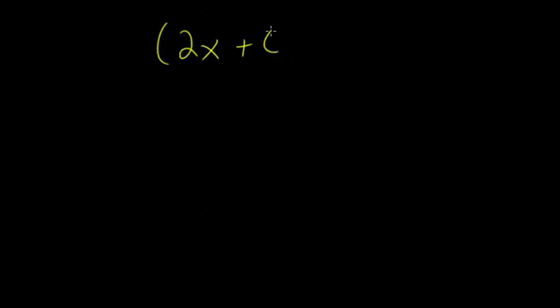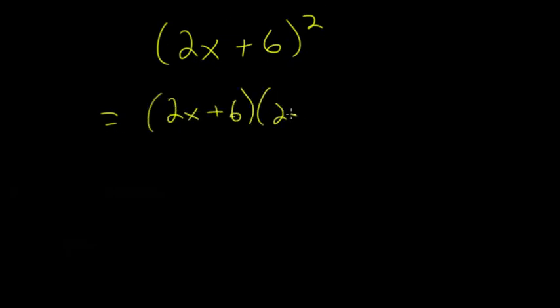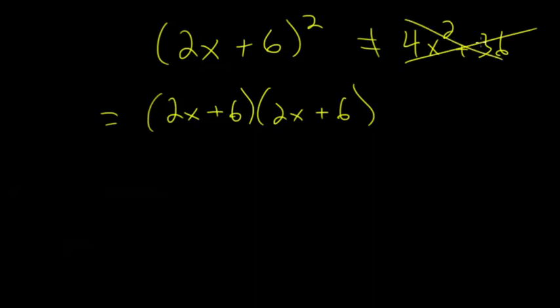Let's look at more examples. Consider (2x plus 6) squared. First, rewrite it as (2x plus 6) multiplied by itself, rather than making the mistake of writing 4x squared plus 36. When you just square each term, you lose the middle terms involving x.